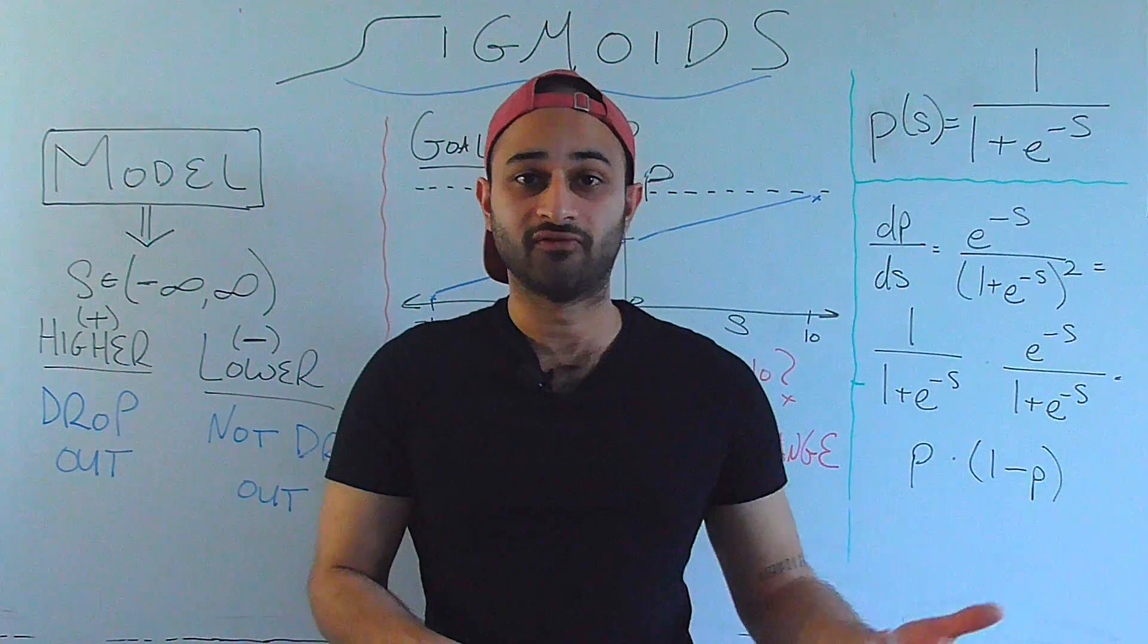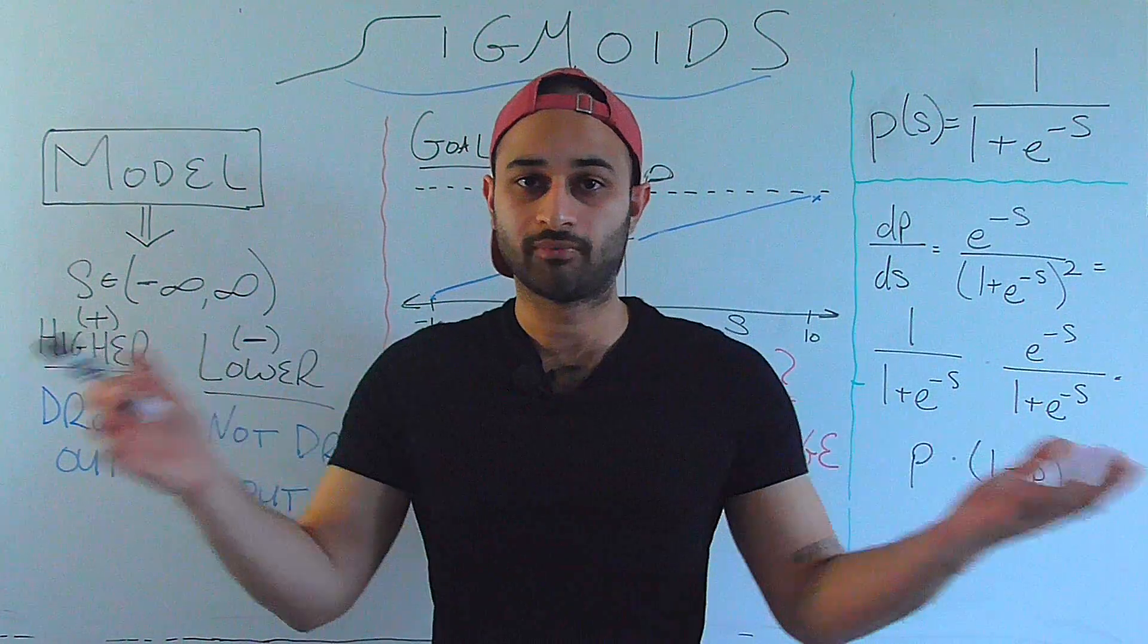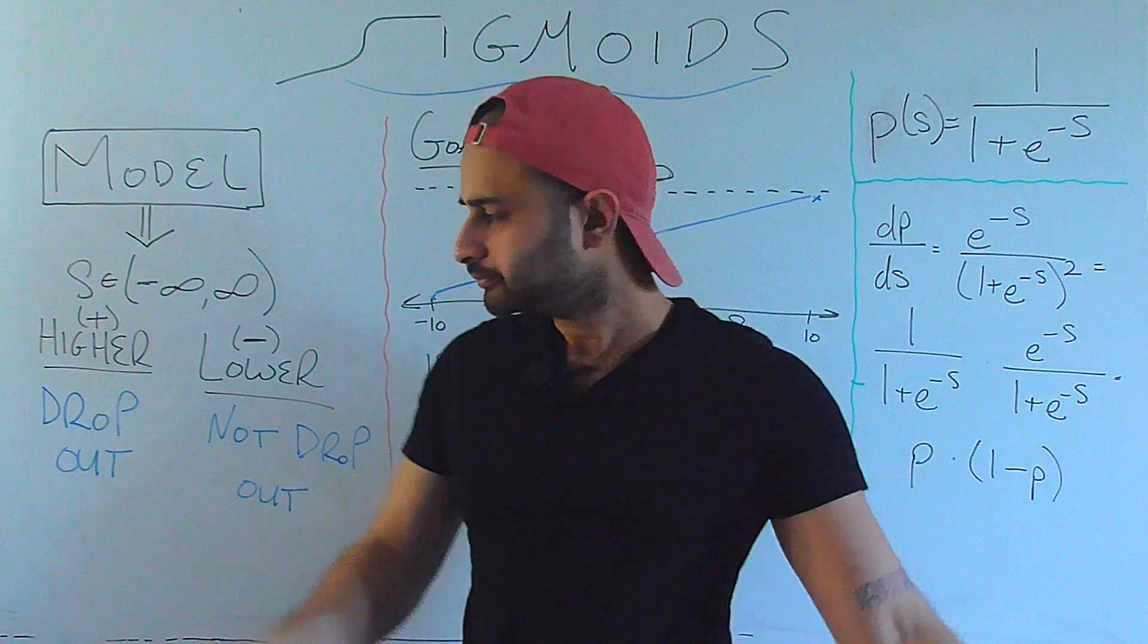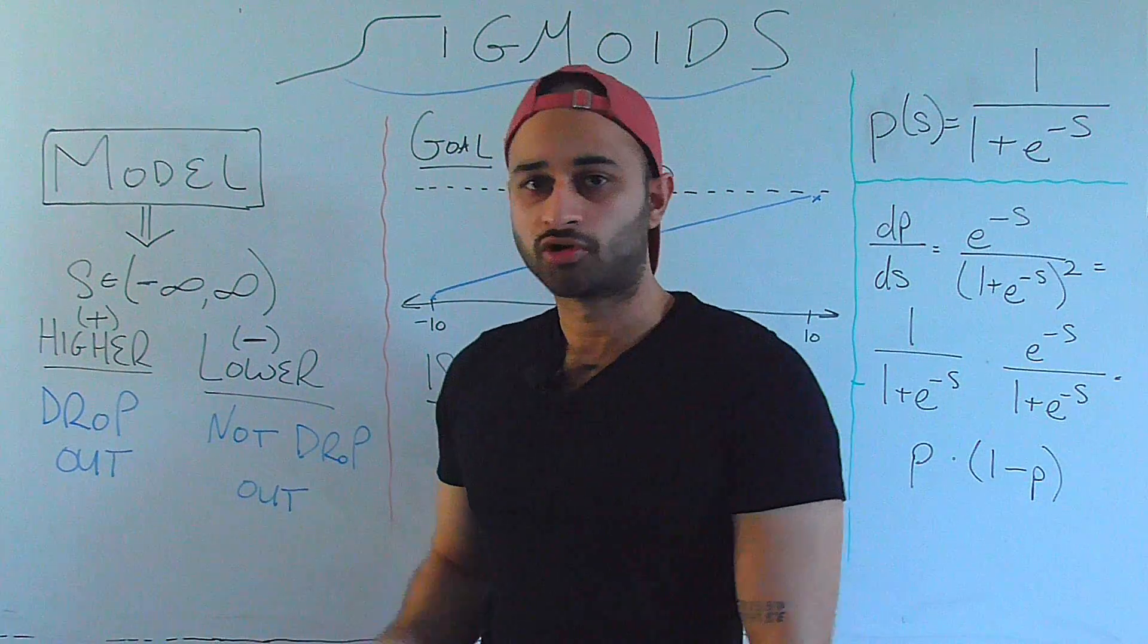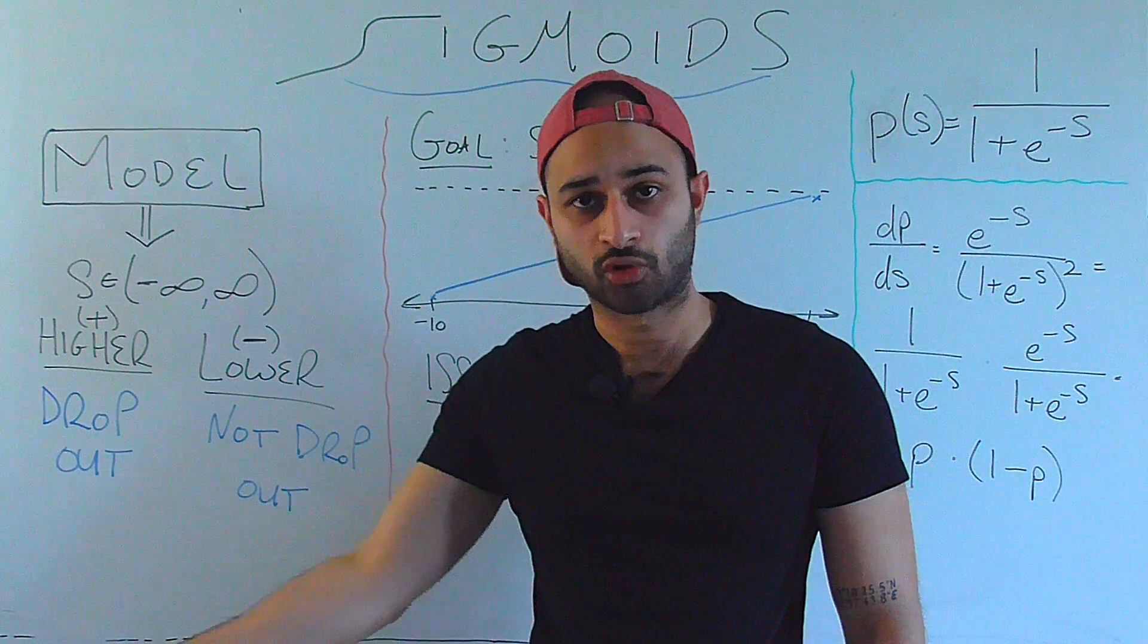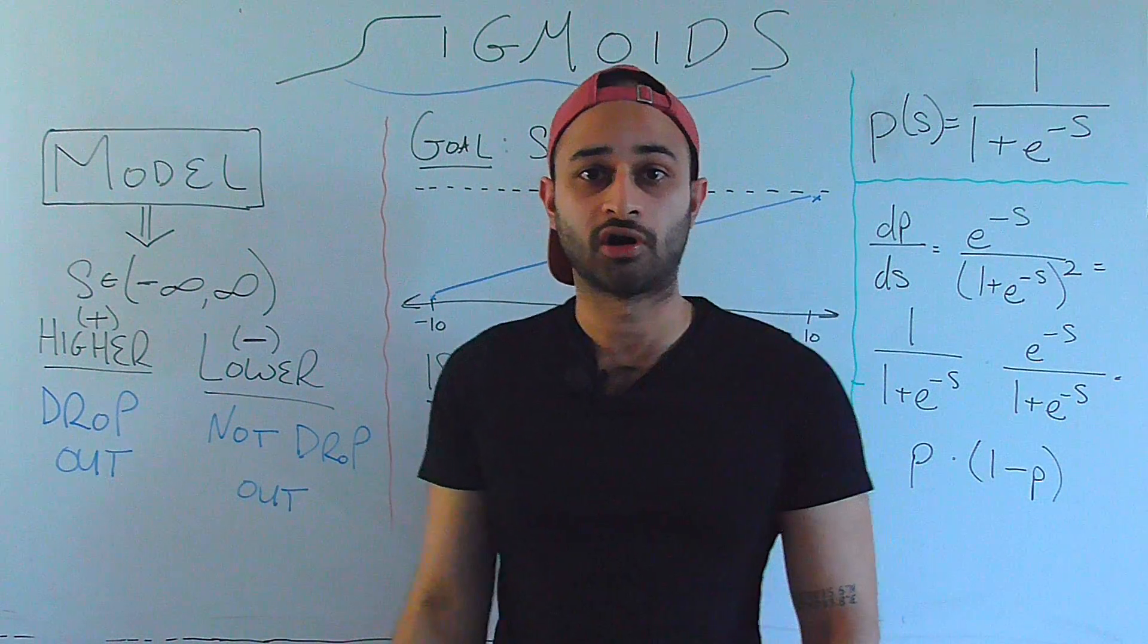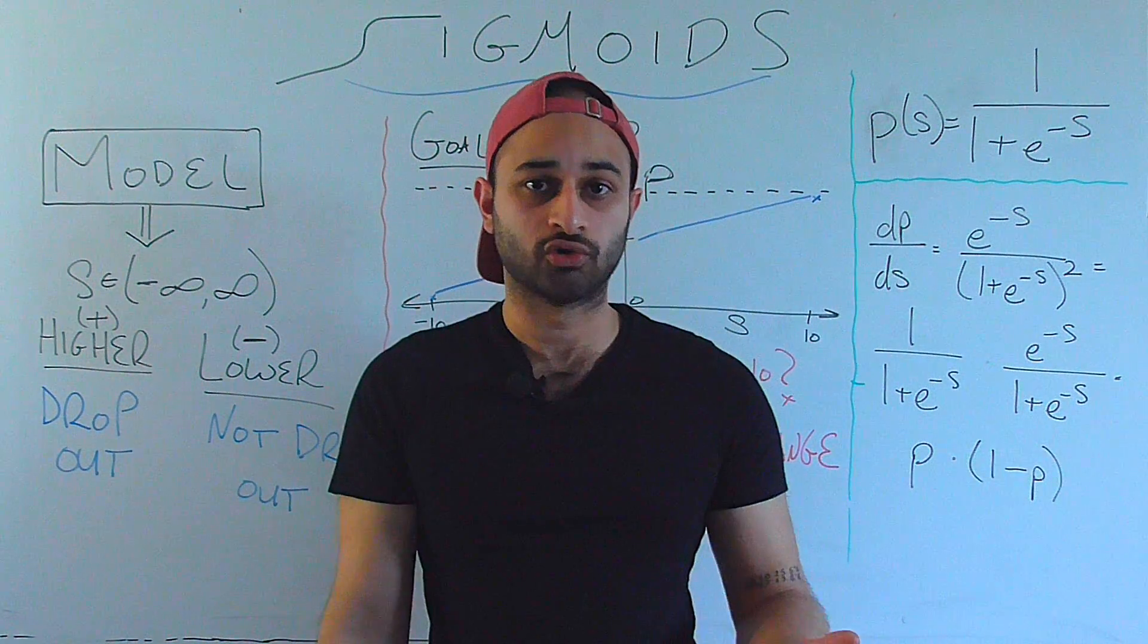The score is between negative infinity and infinity, so it's just unbounded in both directions. But what you do know is that the higher the score is, so the more towards positive infinity the score is, the higher evidence we have that this current student will indeed drop out of high school.